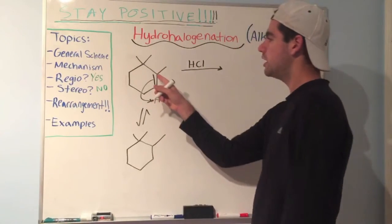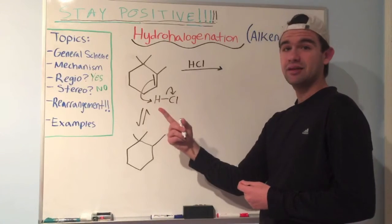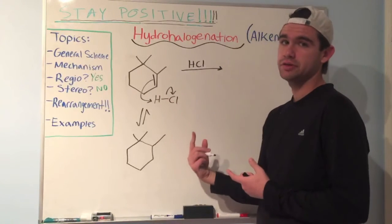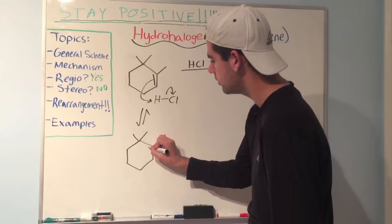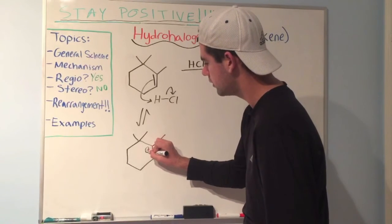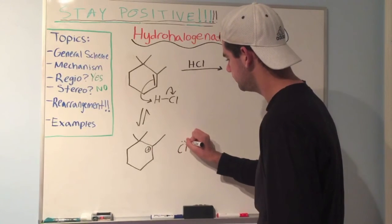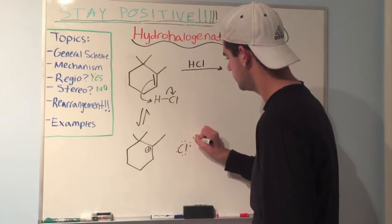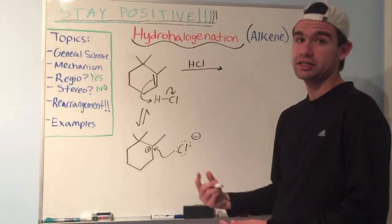So now we've protonated one of these carbons. Remember, you want to protonate the carbon that is less substituted so that the more substituted carbon can become the carbocation. So carbocation now goes here. Now we have Cl- floating around in solution.